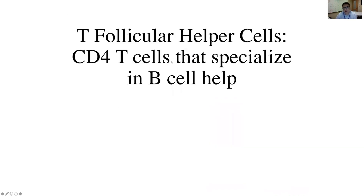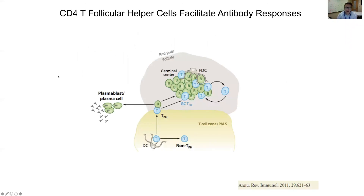At the T-B border, B cells interact with T follicular helper cells. A TFH cell is a CD4 T cell that specializes in B cell help and gains access to the B cell follicle. If a CD4 T cell in the T cell zone interacts with a dendritic cell under the right conditions, a subset differentiates into TFH cells. These cells gain access to the T-B border, and if they receive signals from a B cell, they go deeper into the germinal center and interact with B cells, causing them to differentiate into plasmablasts or plasma cells which produce antibody.